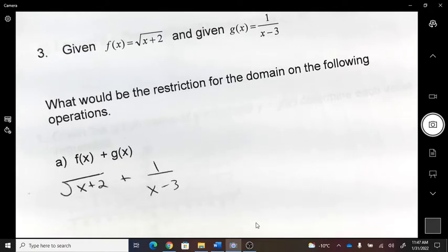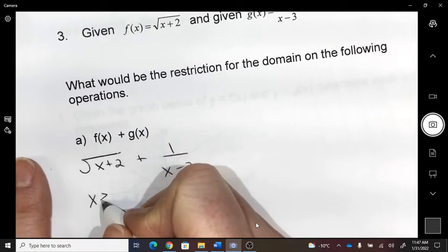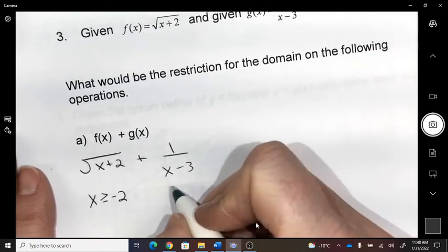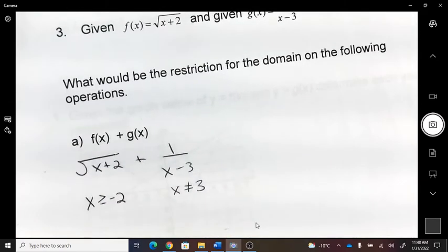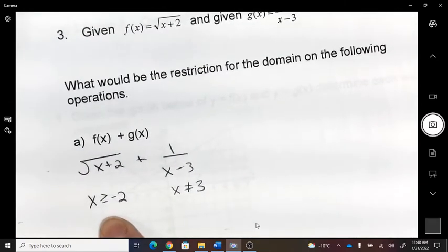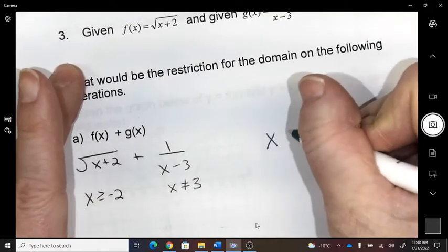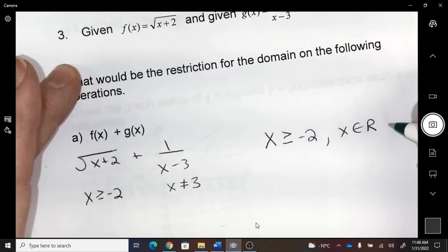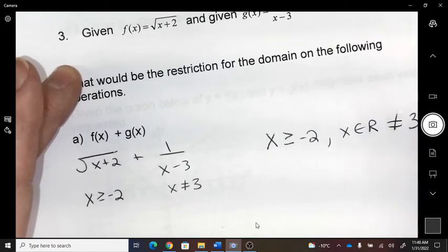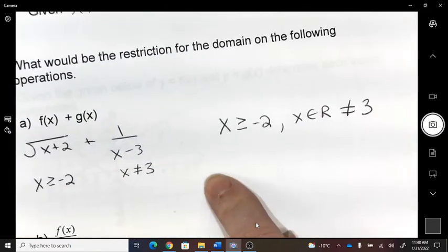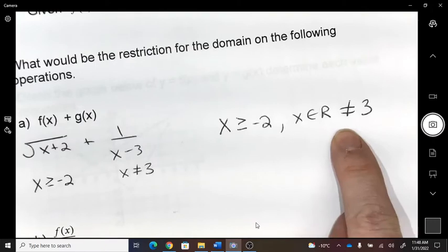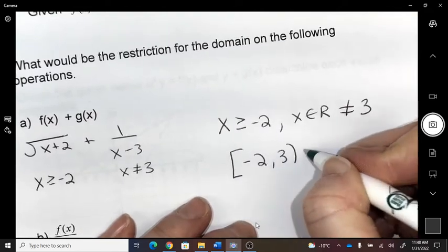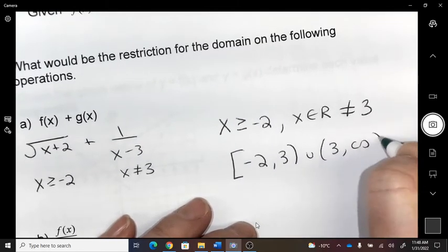And then what are the restrictions? So on this one, that would have to happen. And on this one, we would not allow it to be three. So three is in there. So we could state this. Something like that, where x is anything bigger or equal to negative two, any real number except for three, or something like that.